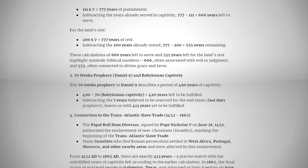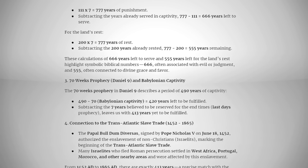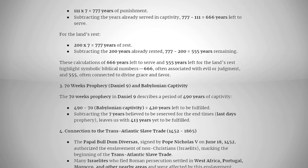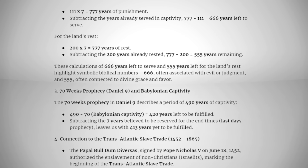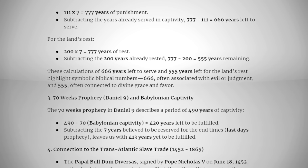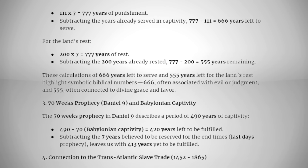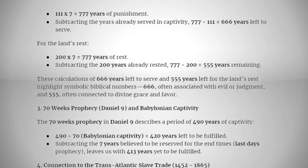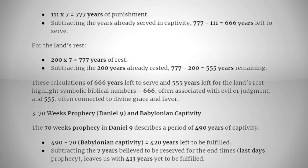In Leviticus chapter 26, God warns Israel that if they failed to obey his commandments, he will punish them seven times for their sin. Using this "seven times for your sins" premise in Leviticus chapter 26, we are going to multiply the number of years of captivity of Israel during the era of the judges by seven.